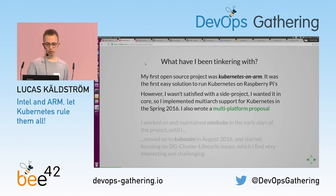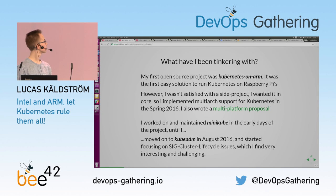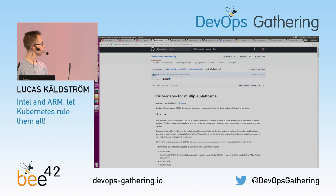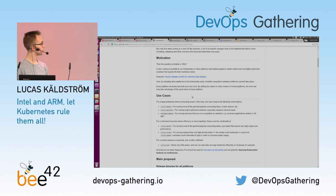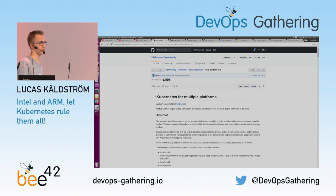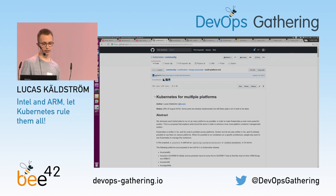Last year I wrote a multi-platform proposal that was accepted. It looks like this — you can go find it in the kubernetes/community repo along with other proposals. It's a pretty long description of what this is, how it should work, how it could work, and what Kubernetes projects should do to be compliant with this design.